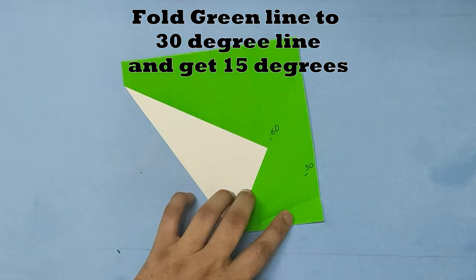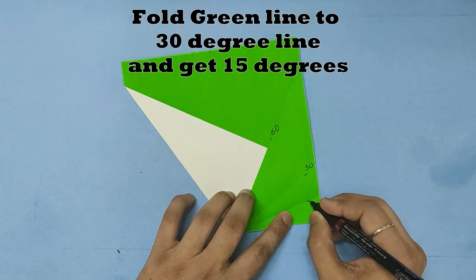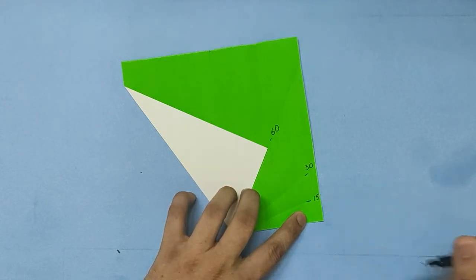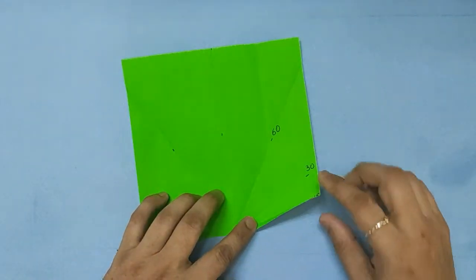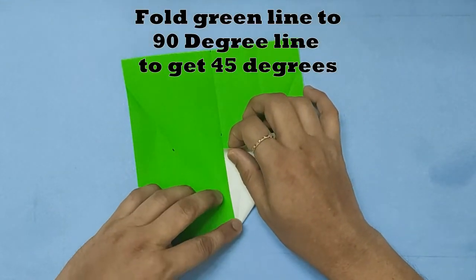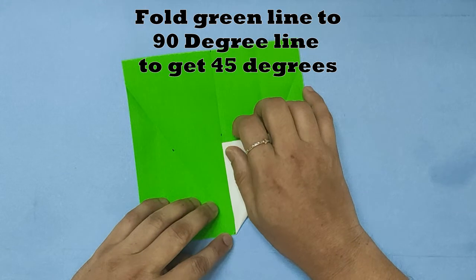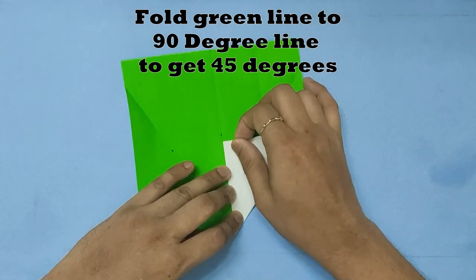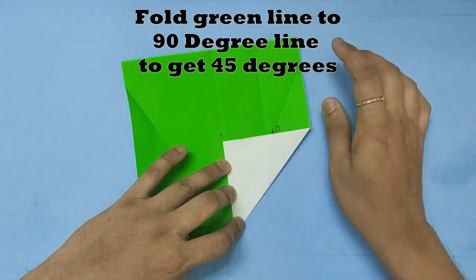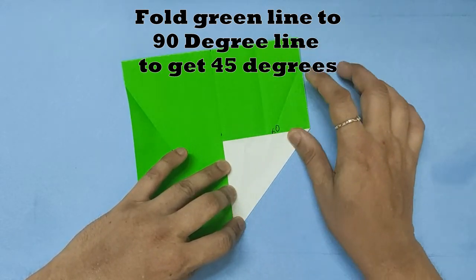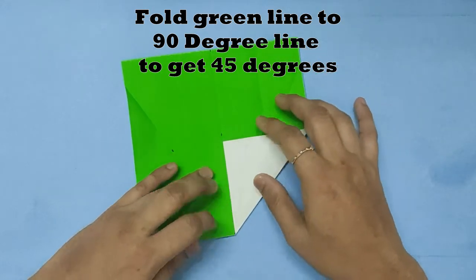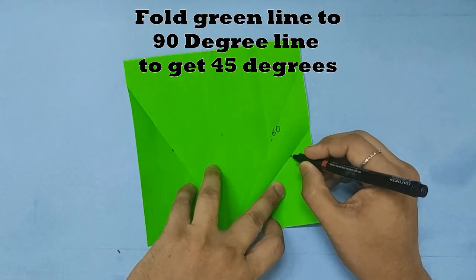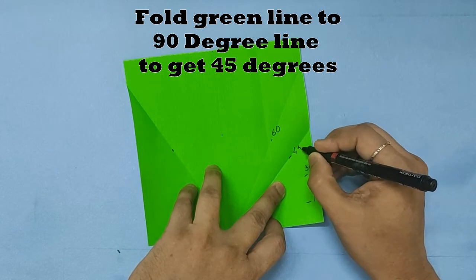Open it and we have got your 15 degrees. We take the lower edge and align it with the 90 degrees, bisecting 90 to get 45 degrees. That's 45 degrees.